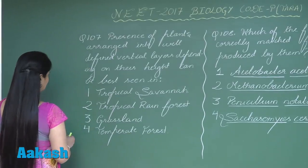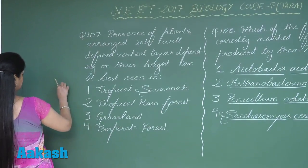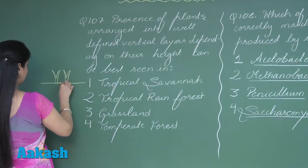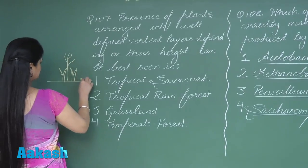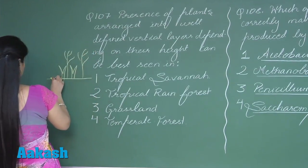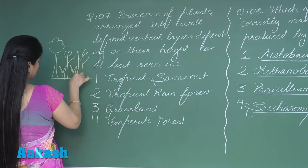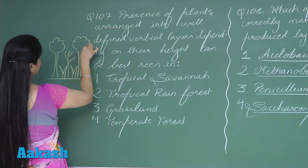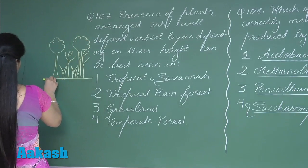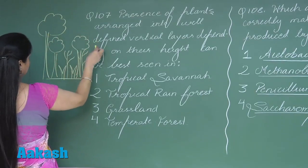Starting from the base, there is ground vegetation — herbs form the first strata. Then shrubs form the second strata. Coming to the understory trees, this layer forms the third vertical layer.